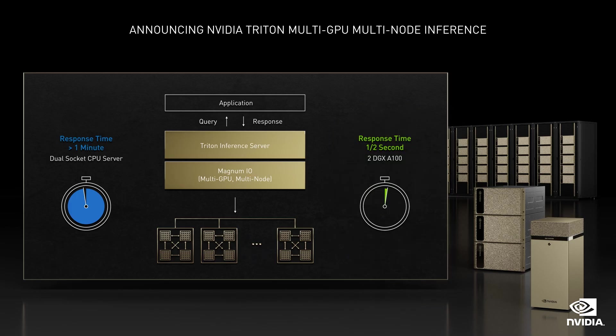GPT-3, with 175 billion parameters, needs at least 350 gigabytes of memory. Megatron, with 530 billion parameters, needs over one terabyte of memory. So we created the world's first distributed inferencing engine. NVIDIA Triton now does distributed processing across multiple GPUs and multiple nodes. GPT-3 will fit easily on an eight-GPU server. Megatron 530B will distribute across two DGX systems. The performance is incredible — from over a minute down to half a second.